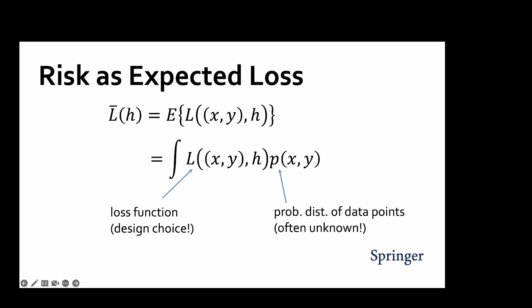This allows us to define the expected loss or risk of a hypothesis. The risk is an average measure of how well a given hypothesis predicts the label of a randomly chosen data point. The evaluation of the risk requires the probability distribution P of X and Y, however, which is often unknown.